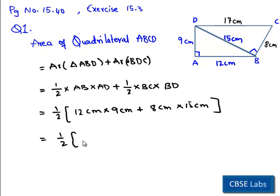12 times 9 is 108 centimeter square plus 8 times 15 is 120 centimeter square. And in the next step, we have half of sum of 108 and 120 is 228 centimeter square.